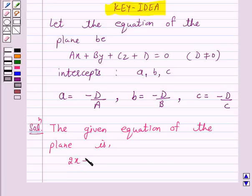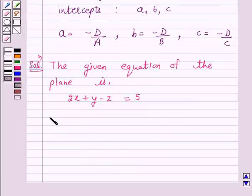2x plus y minus z is equal to 5 or this can be written as 2x plus y minus z minus 5 is equal to 0. So, this is of the form